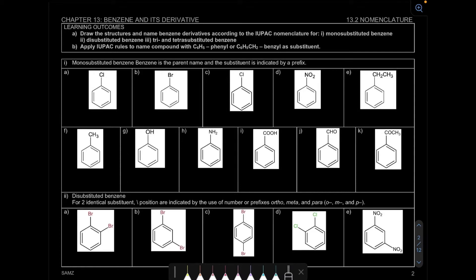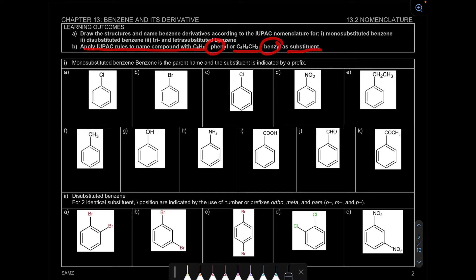Assalamualaikum and hello everyone. In this video, we're going to learn subtopic 13.2, nomenclature — or naming. We're going to draw the structure and name the benzene derivatives for mono-substituted benzene, which means we have one substituent. Then we're going to learn about di-substituted benzene with two substituents, tri- and tetra-substituted benzene with three and four. We'll also apply rules to name compounds with C6H5 (phenyl) or C6H5CH2 (benzyl) as a substituent.